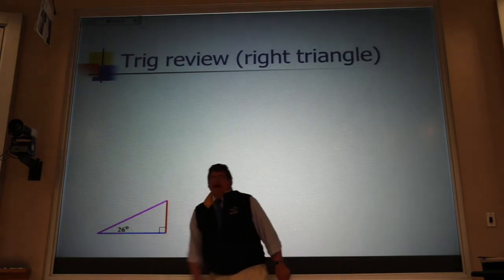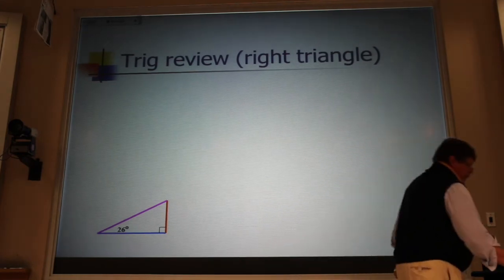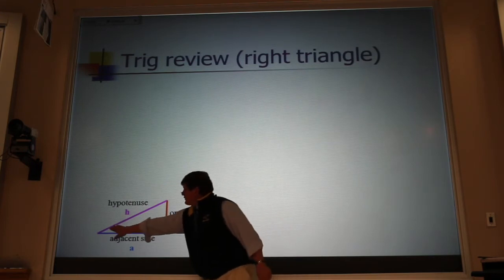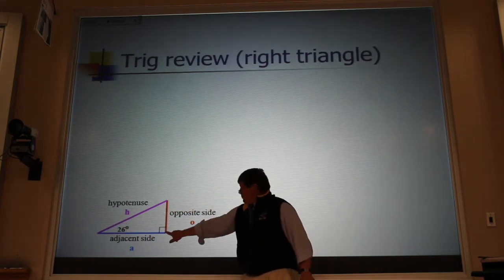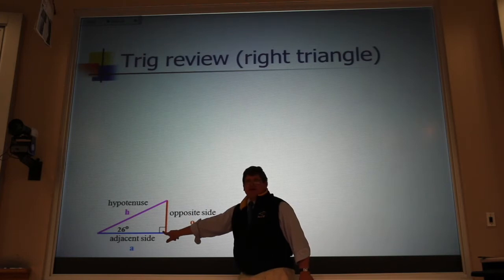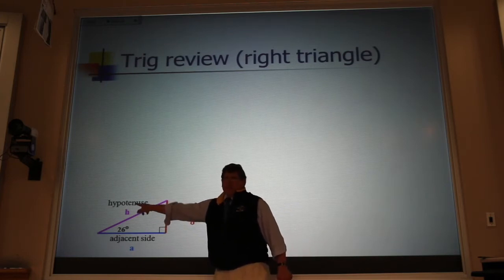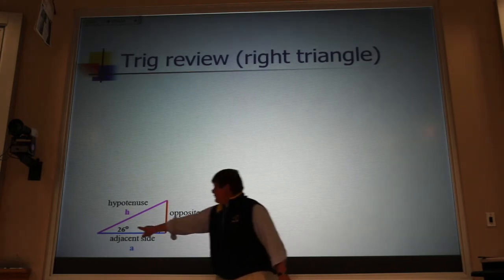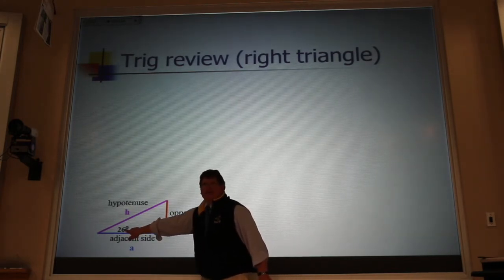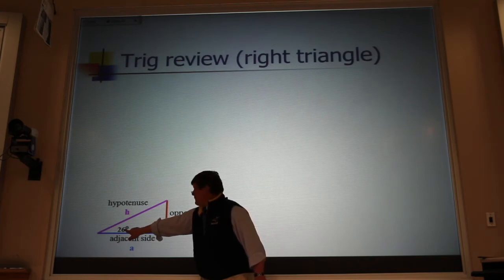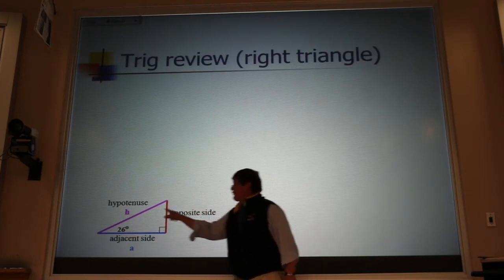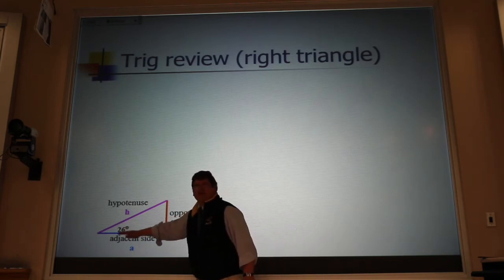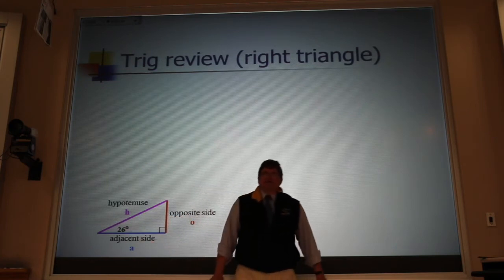But we usually label one, and that gives us a reference for how we can label our sides. The part of the triangle that is the longest part, the part that's across from the 90 degrees, is the hypotenuse. And then the two sides are labeled relative to how they are located relative to this angle that's labeled. The opposite side is across from that labeled angle. The adjacent side is touching that angle.